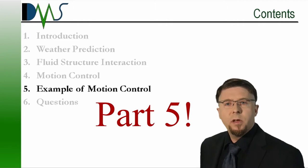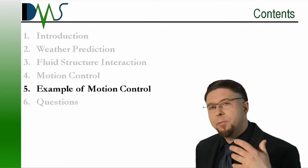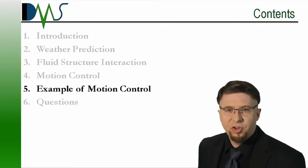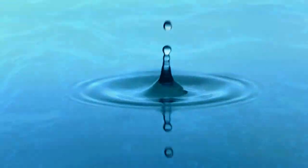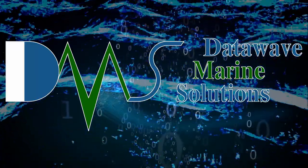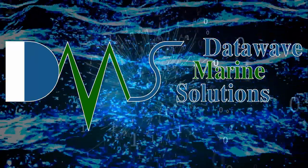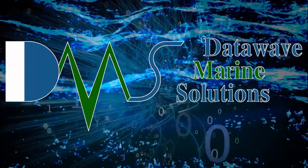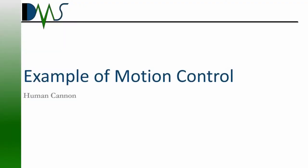Part 6 of our video series shows how we can apply the principles of motion control to a hypothetical situation. I'd like to finish this off by providing a bit of an application example — something to really show you how motion control can work in reality, and how a typical seakeeping project might go. So let's take a hypothetical situation of a human cannon.